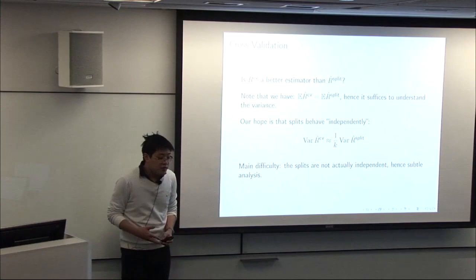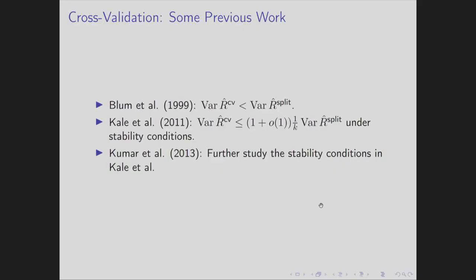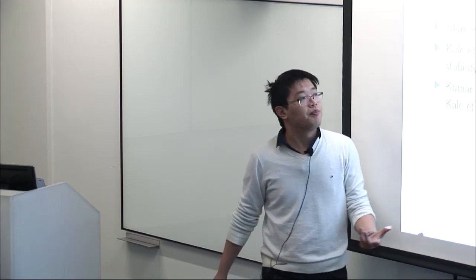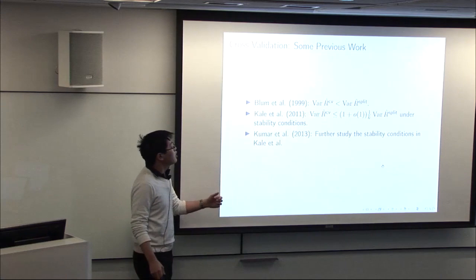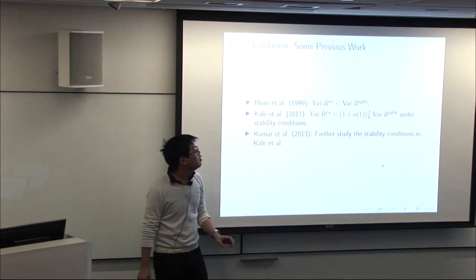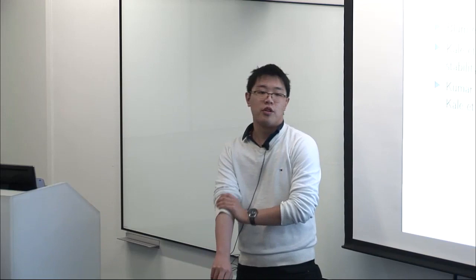A natural hope is that if you don't have too many folds, the folds behave mostly as if they were independent, giving a k-fold reduction in variance. The main difficulty is that the folds are not actually independent—you're using the same data to train and test—making the analysis much more complicated. Some existing analysis: Arlot and Celisse showed the variance is no more, and under some mild conditions strictly less than the split estimator. More recently, Sachin and co-authors showed that under some stability conditions you can guarantee a k-fold reduction in variance up to a constant factor, though these stability conditions can be hard to check.